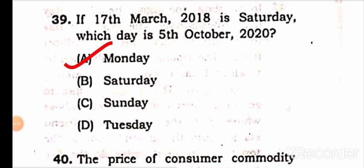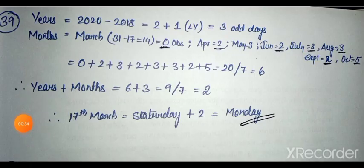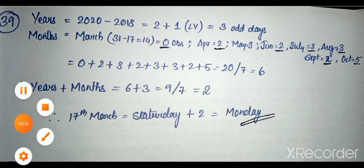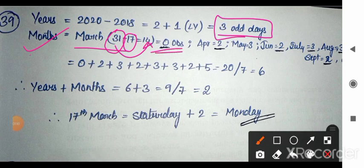Question 39: If 17th March 2018 is a Saturday, which day is 5th October 2020? For the solution, first find the years: 2020 minus 2018 equals 2, plus 1 because 2020 is a leap year — February has one extra day. So we get 3 odd days from years. Then for months: 17th is the given date, so 31 minus 17 equals 14; divide by 7 gives 0 odd days.